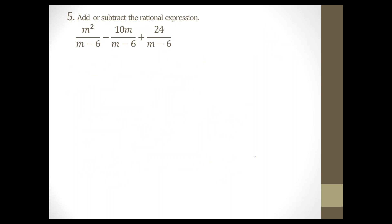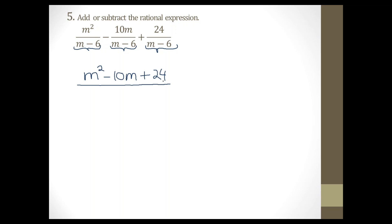Question number 5: add or subtract the rational expression. When adding or subtracting rational expressions — just like with fractions — you need the same common denominator. In this case all denominators are the same, so we can just add or subtract the numerators together. Since they are not like terms, we write them next to each other. All have the same denominator, which is m minus 6.